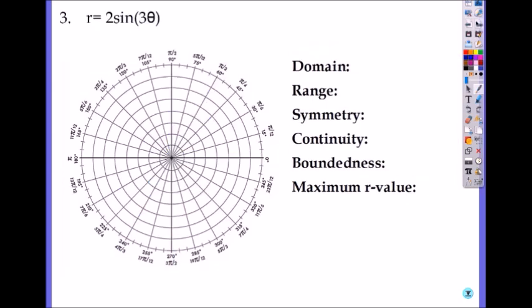3. r equals 2 sine 3 theta, it's a rose with 3 petals, right? If it's odd, it's just that number. And 2 is the length of the petal. So it will look like this. 1, 2, 3. This is 3. It will look like this. Because it's sine, that means it will be symmetric on the y-axis. So symmetric will be on the y-axis, not on the pole, neither x-axis.